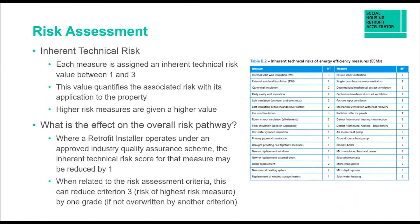The inherent technical risk (IHT) of measures is important to understand. The table on the right outlines the IHT value for each measure, given a number between one and three. This value quantifies the associated risk of applying that measure to a property — higher-risk measures get a higher value. For example, IWI carries a high risk of interstitial condensation, so it's given an IHT value of three. By contrast, applying a hot water insulation jacket to a cylinder is very low risk and is given an IHT of one.